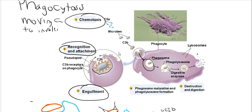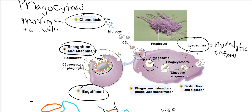Once this occurs, another organelle called the lysosome comes into play. Lysosomes contain hydrolytic enzymes that will degrade all the macromolecules of the pathogen — one of these enzymes includes lysozyme, which is why lysosome sounds a lot like lysozyme. These lysosomes will fuse with the phagosome.